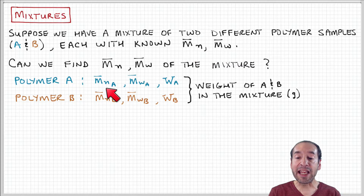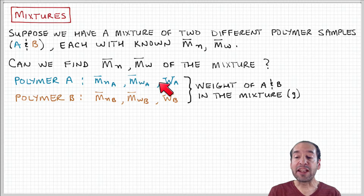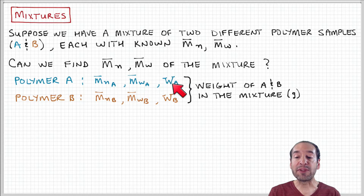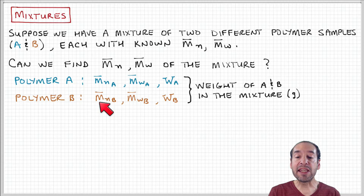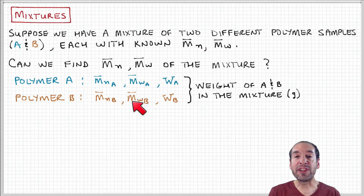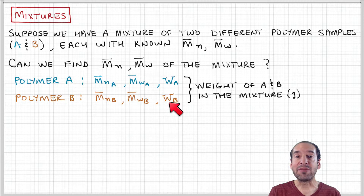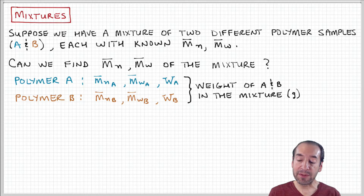For polymer A, I know the number and weight average molecular weight, and I also know how many grams of A I'm adding. For polymer B, I know the number and weight averages associated with that sample, and I know how much I'm going to add to the mixture in terms of its weight or number of grams.